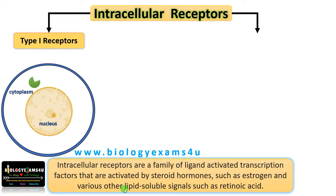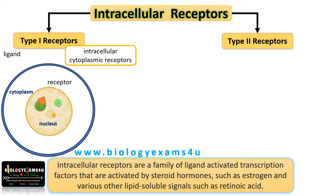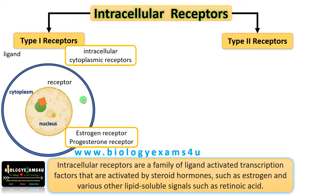There are two types of intracellular receptors: type 1 receptors and type 2 receptors. Type 1 receptors are intracellular cytoplasmic receptors — that means the receptor is located in the cytoplasm. The ligand binds to the receptor in the cytoplasm, then this ligand-receptor complex is translocated into the nucleus where it binds to DNA and induces gene expression. Examples include estrogen receptor and progesterone receptor.